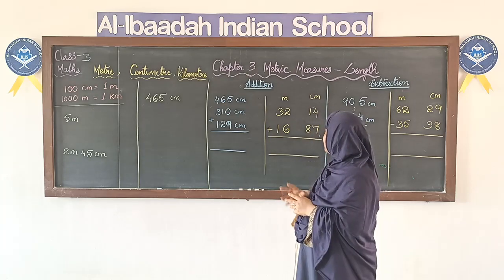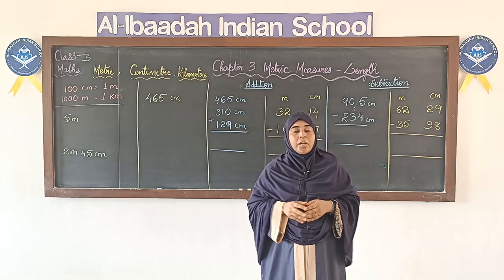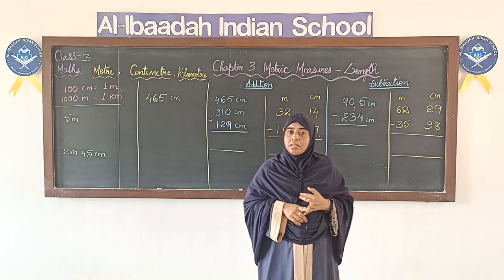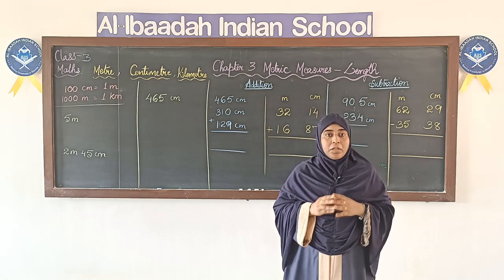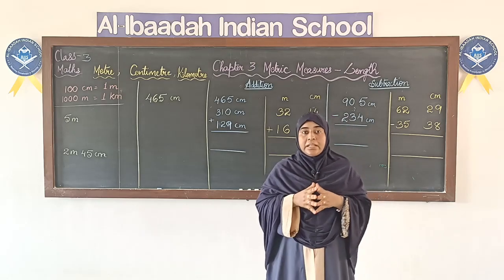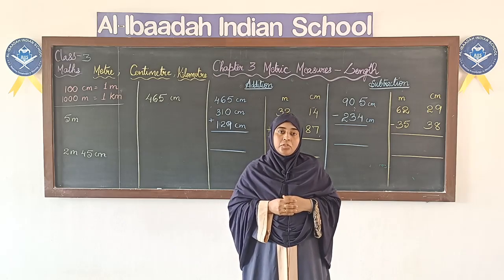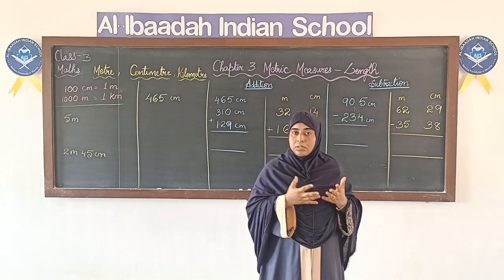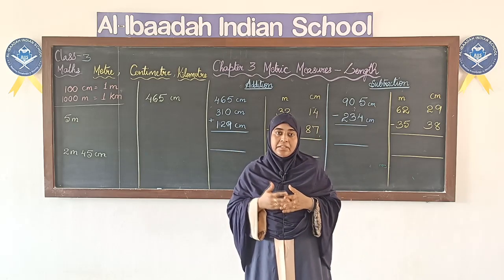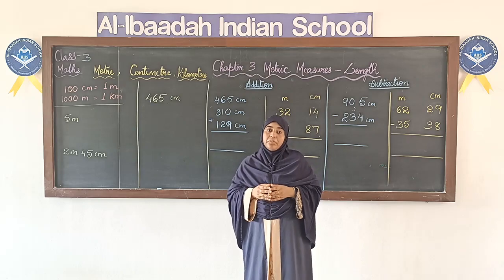Today we are going to start a new topic: metric measures. You have already learnt about these measures in your previous classes. In metric measures we have three types: length, weight, and capacity. Today we are going to focus on length. When we say we are calculating length, we try to find how long or how tall a thing is — for example, measuring a cloth or measuring height.